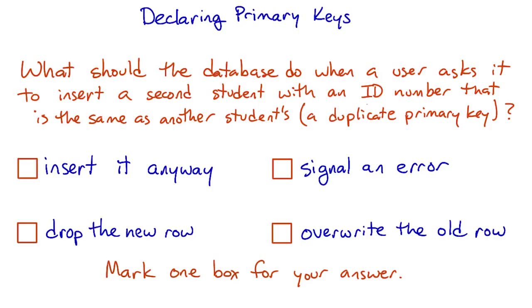What should the database do when a user asks it to insert a second student with an ID number that is the same as another student's, in other words, a duplicate primary key? Should it insert the new row anyway? Should it signal an error, like an exception in Python? Should it silently drop the new row, or should it overwrite the old row?